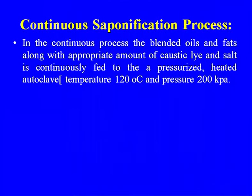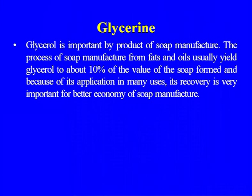In the continuous process, blended oils and fats along with the appropriate amount of caustic lye and salt are continuously fed to a pressurized, heated autoclave at a temperature of 120°C and pressure of 200 bar. Glycerin is a very important byproduct of soap manufacture and the effective and economical recovery of glycerin adds to the overall economics of soap making.